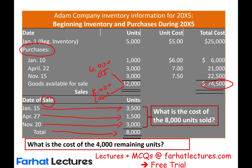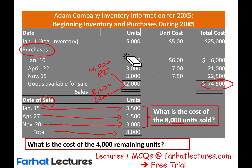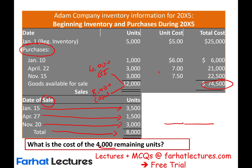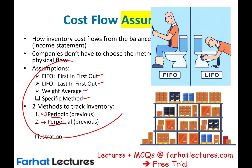What do we do when we sell those units? We expense them in the form of cost of goods sold. The only problem becomes: what is the cost of the 8,000 units sold? We sold 8,000 units, but which 8,000 units did we sell? We have 12,000 total. Because it makes a difference — which units we sold and what's the cost of the 4,000 remaining units. This is where the assumptions help.